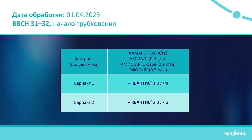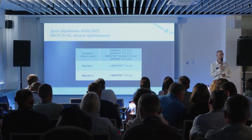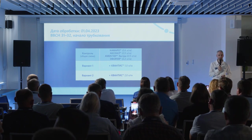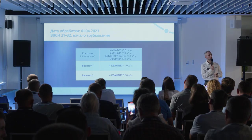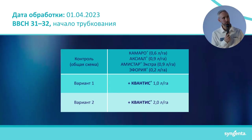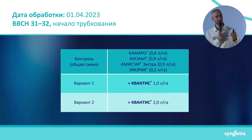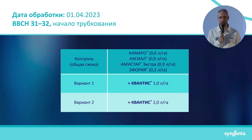Regarding treatments: the scheme chosen is average for Russia. We needed to protect the crop from broad-leaved and monocot weeds and from grass weeds, and to work at tillering against Septoria, which typically occurs quite early. Fairly high application rates were used — Amistar at 0.9 l/ha and Euphoria were applied to control all possible pests. This is the control scheme I've just described.